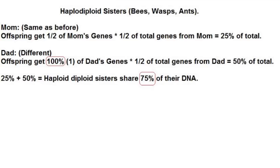The haploid father produces his sperm cells through mitosis, meaning each sperm cell has exactly the same chromosomes as every other cell, and each sperm cell has exactly the same chromosomes as all the other sperm cells. So all of the alleles inherited from the father are the same between two sisters. This means that the half of the genome inherited through the father is entirely shared between two sisters — so one-half of the whole genome is the same due to inheritance through the father.